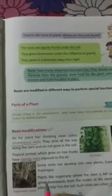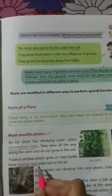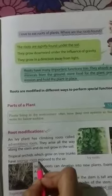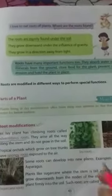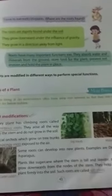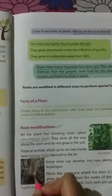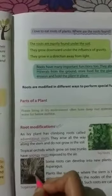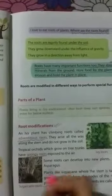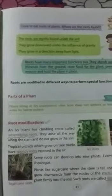Next one is the spongy roots, and after that the next important one is stilt roots. You can see stilt roots in a sugarcane plant. If you have seen the sugarcane plant, then you will easily find out the stilt roots.